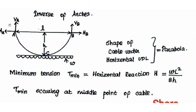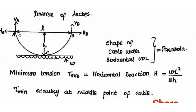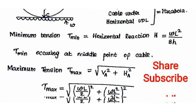VA plus VB equals W times L. Taking moments about point A and equating to zero, we can calculate the horizontal and vertical components. The horizontal component value equals WL² by 8H — the same as the maximum bending moment in a simply supported beam with UDL. The dip H is the sag of the cable. Minimum tension occurs at the midpoint; maximum tension occurs at the supports.